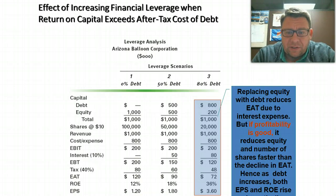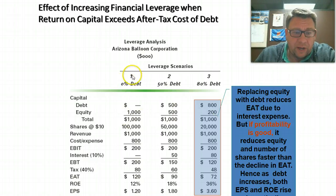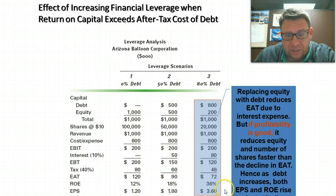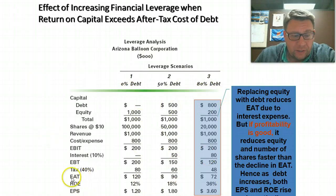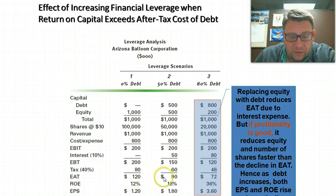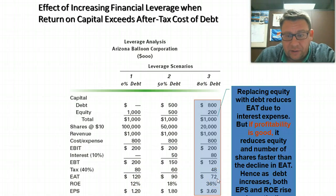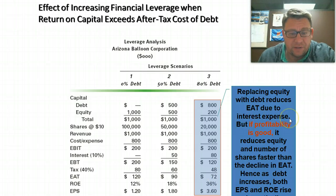Let's look at this example. We have a company here, and its performance at zero debt, 50% debt, and 80% debt. One of the things I want to show you is EAT. Our earnings are actually decreasing as we take on more debt. The reason for that is because interest expense is reducing profits.